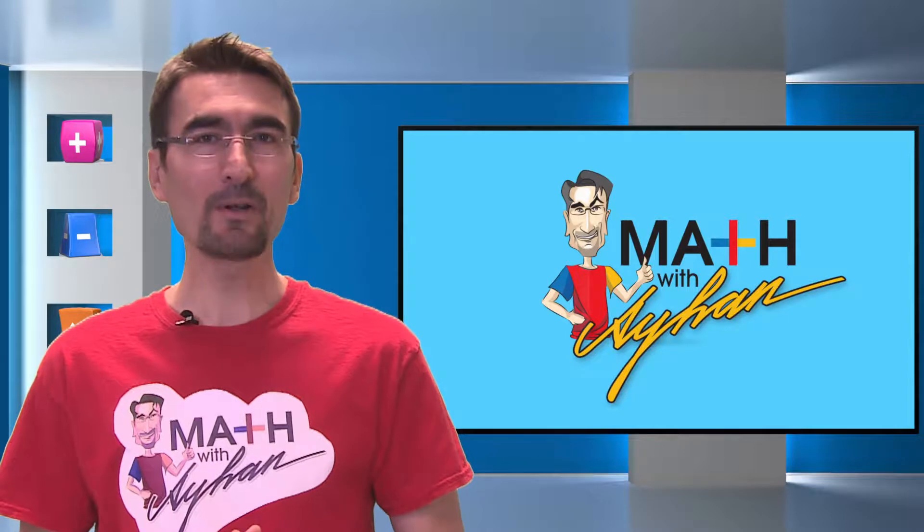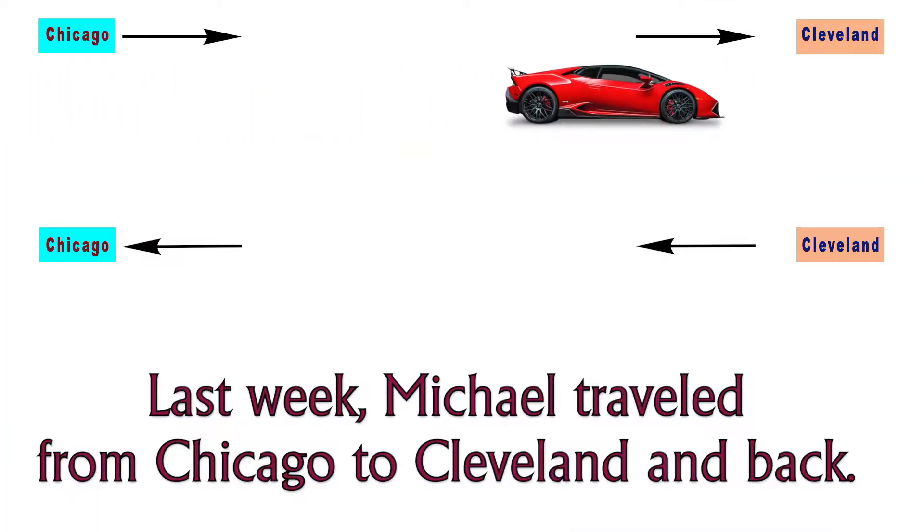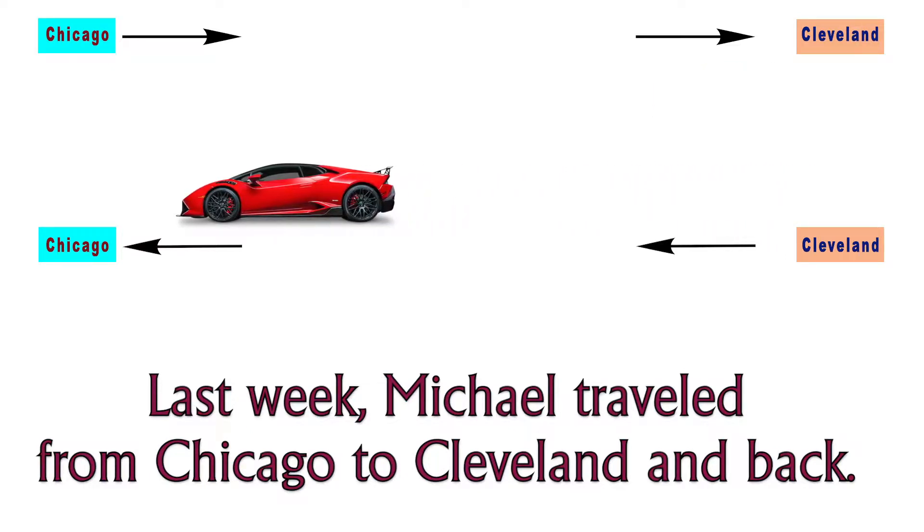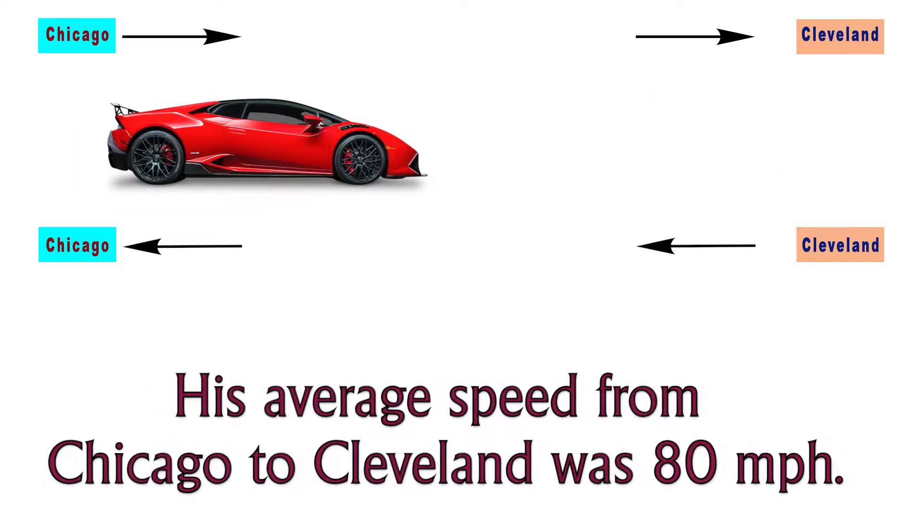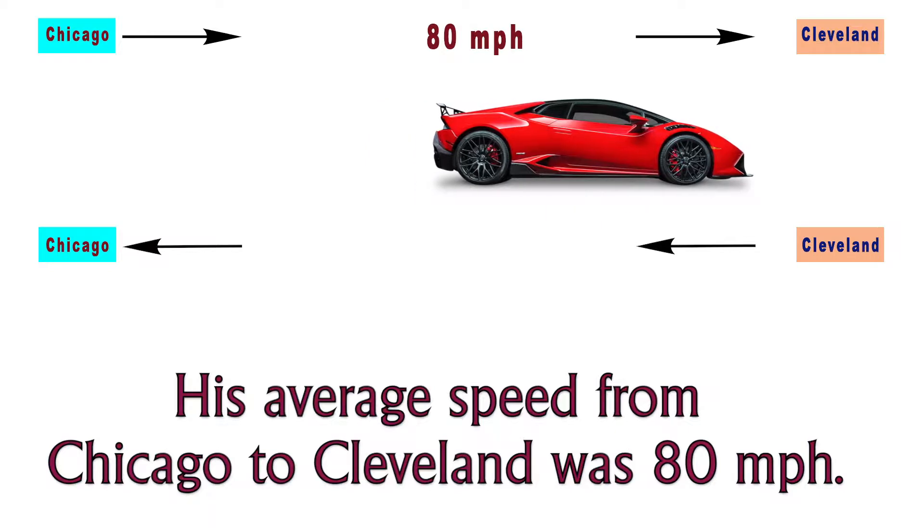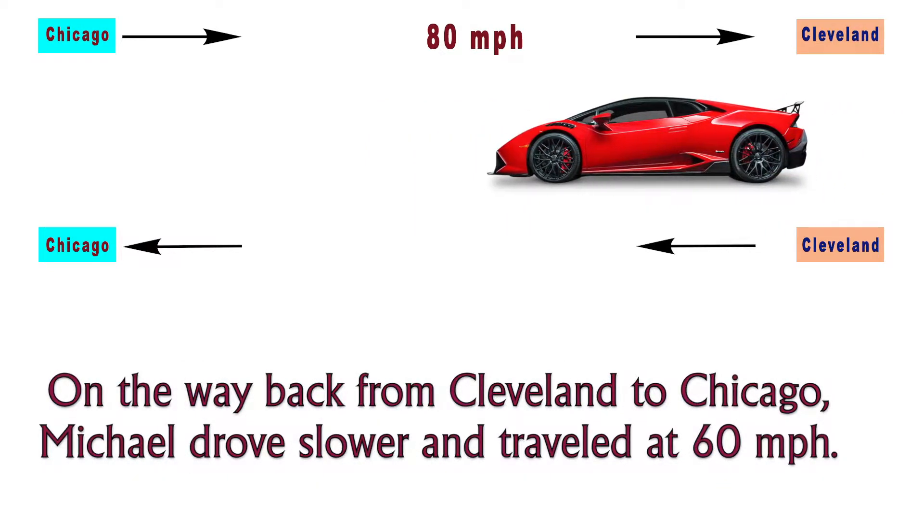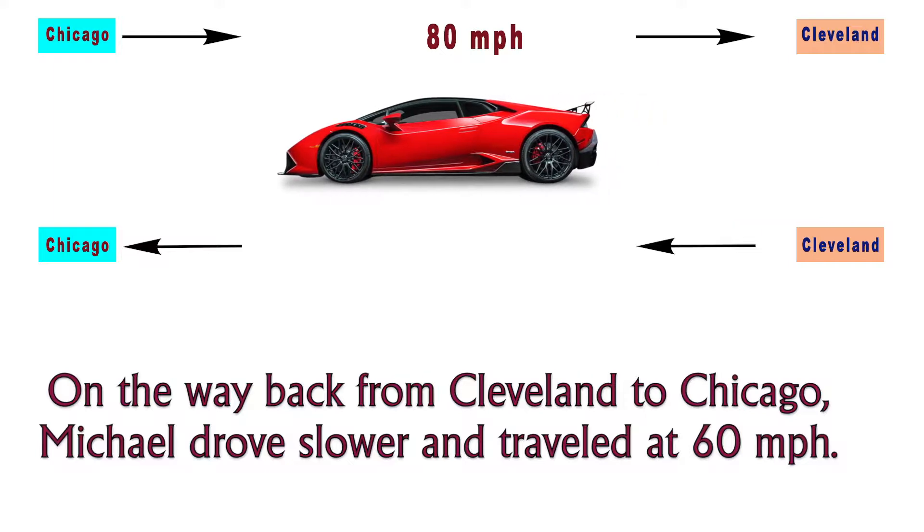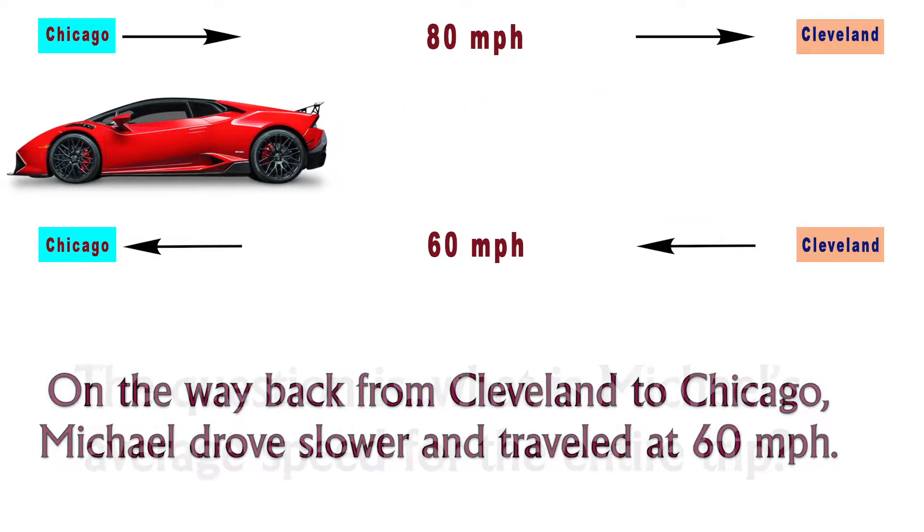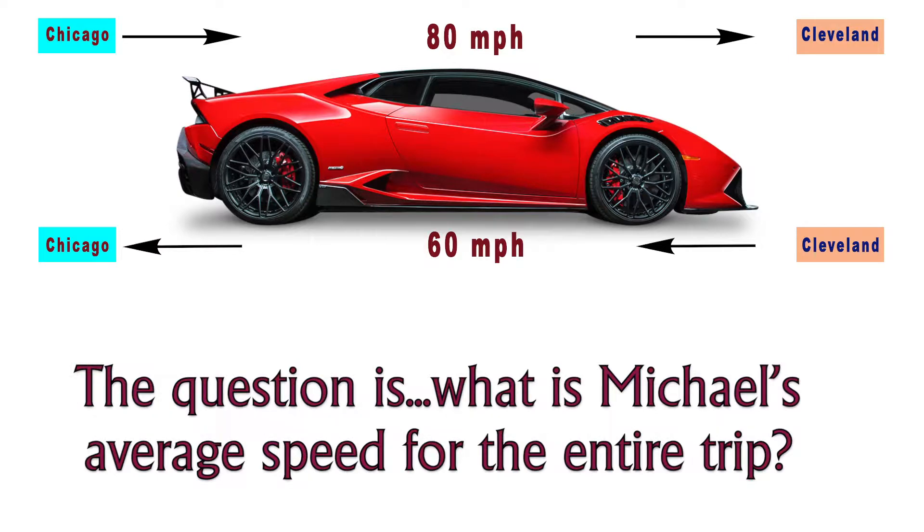This week's word problem will be on average speed and distance. Last week, Michael traveled from Chicago to Cleveland and back. His average speed from Chicago to Cleveland was 80 miles per hour. On the way back from Cleveland to Chicago, Michael drove slower and traveled at 60 miles per hour. So the question is, what is Michael's average speed for the entire trip?